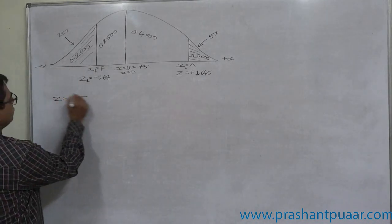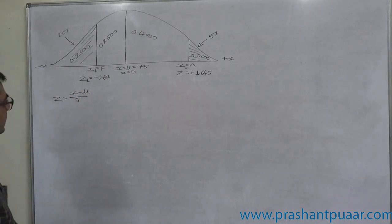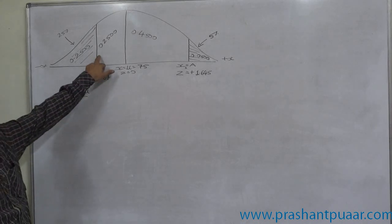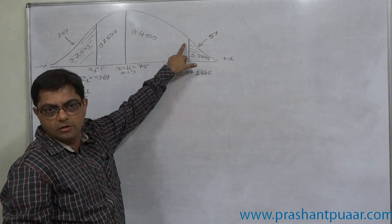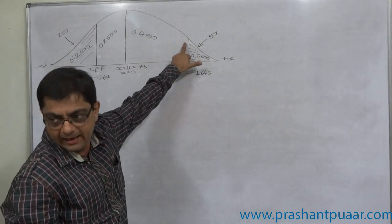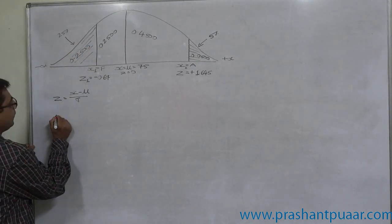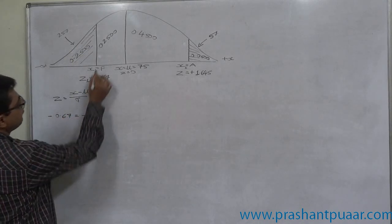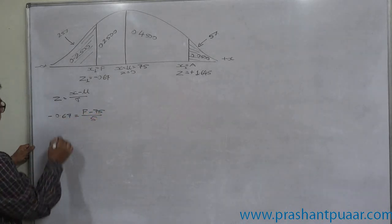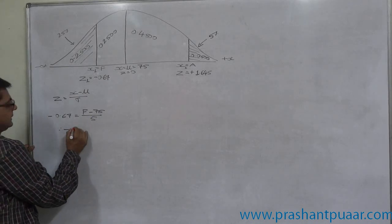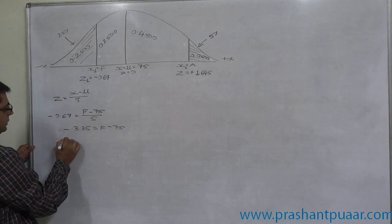Now we know that z-score equals x minus mean divided by standard deviation that is 5. So here x is the highest mark of the students who obtain grade F. So minus 0.67 equals F minus 75 divided by 5. So minus 3.35 equals F minus 75. So 75 minus 3.35, that is F. Therefore F comes to 71.65.